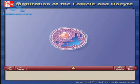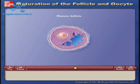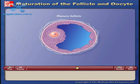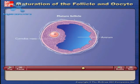The structure is called a mature follicle when the fluid-filled vesicles form a single antrum. At full maturity, the oocyte is located in the cumulus mass.